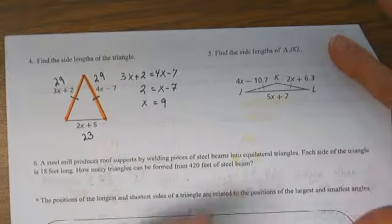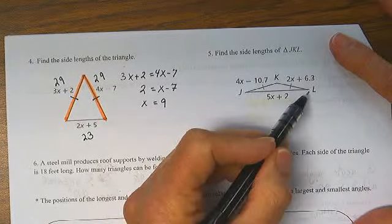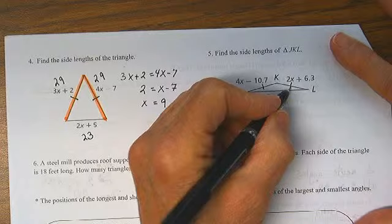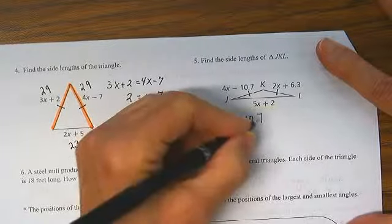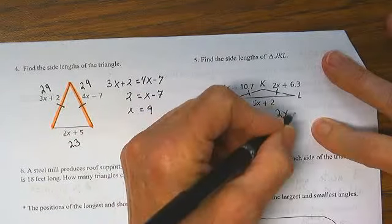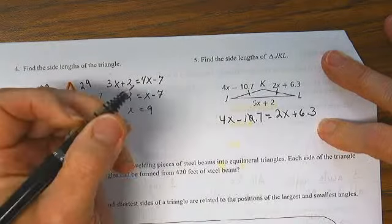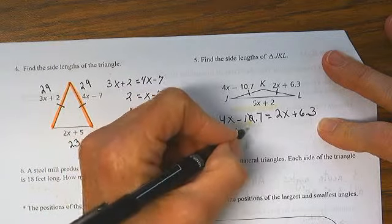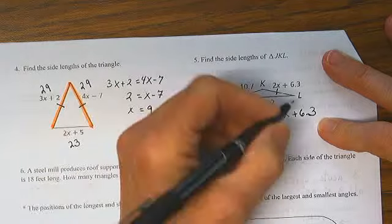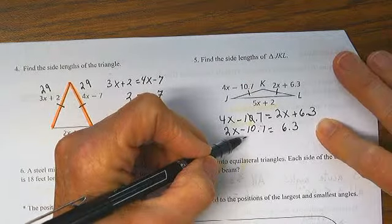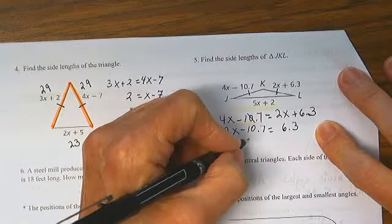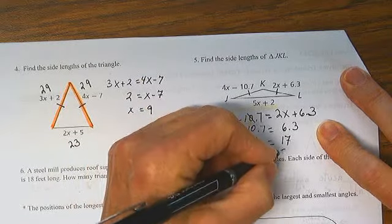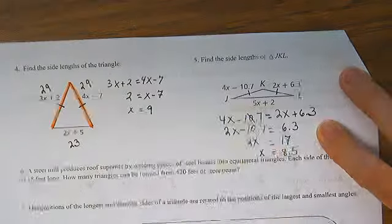Find the side lengths of triangle JKL. Again, this side length is equal to that side length so my equation is 4x minus 10.7 has the same measure as 2x plus 6.3. Subtract 2x from each side. 2x minus 10.7 is equal to 6.3. Add 10.7 to each side. That's going to give me 2x is equal to 17. So x equals 8.5. And substitute to find the side length.